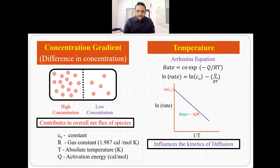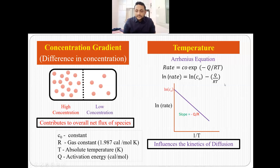If we plot a graph between ln(rate) and 1/T, we get a straight line where the intercept is ln(C₀) and the slope is −Q/R. Analyzing this graph, we can see that as we increase the temperature, the rate of diffusion increases. That is how temperature influences the kinetics of diffusion. So concentration gradient and temperature are the two factors which affect the diffusion process.